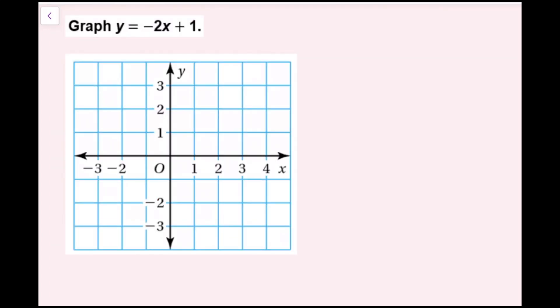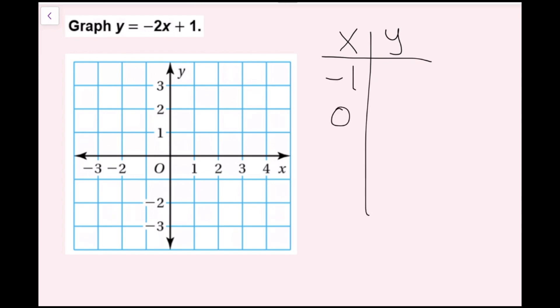In this example, we're going to graph the line y equals negative 2x plus 1. Whenever you're graphing and you're feeling unable, make a table — a table of values. I'm going to make a table of values with x's and y's. You only need 2 points to graph a line, but the more points you have, the more accurate your graph will be. So I'll do 4 points, picking negative 1, 0, 1, and 2 as my x values. We'll plug all of these into our equation to find the corresponding y values.